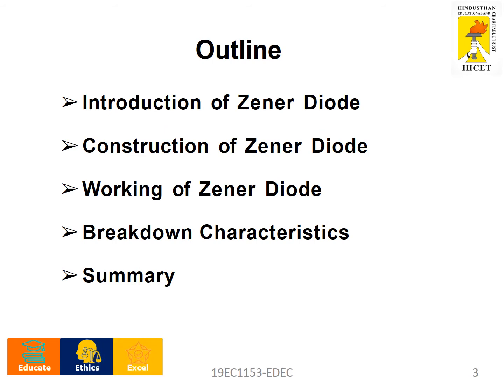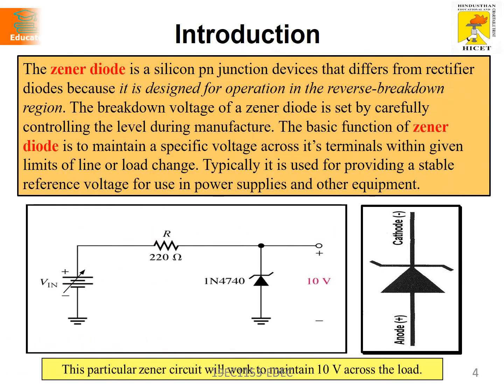The outline of this presentation covers: introduction, construction, working of a zener diode, breakdown characteristics, and a summary. In the introduction, you can see it is very simple — a zener diode consists of an anode and cathode once it is connected in a circuit.